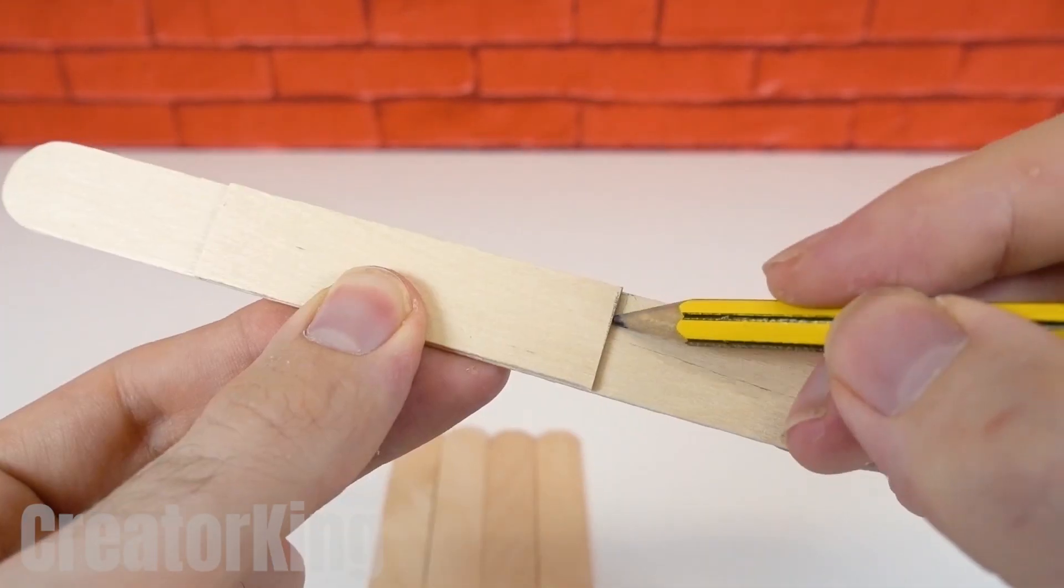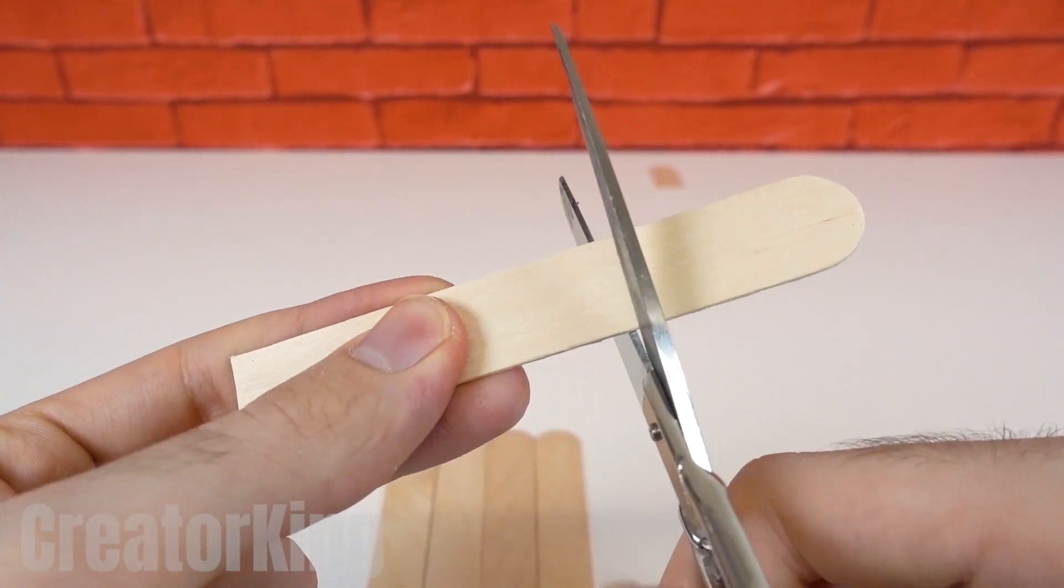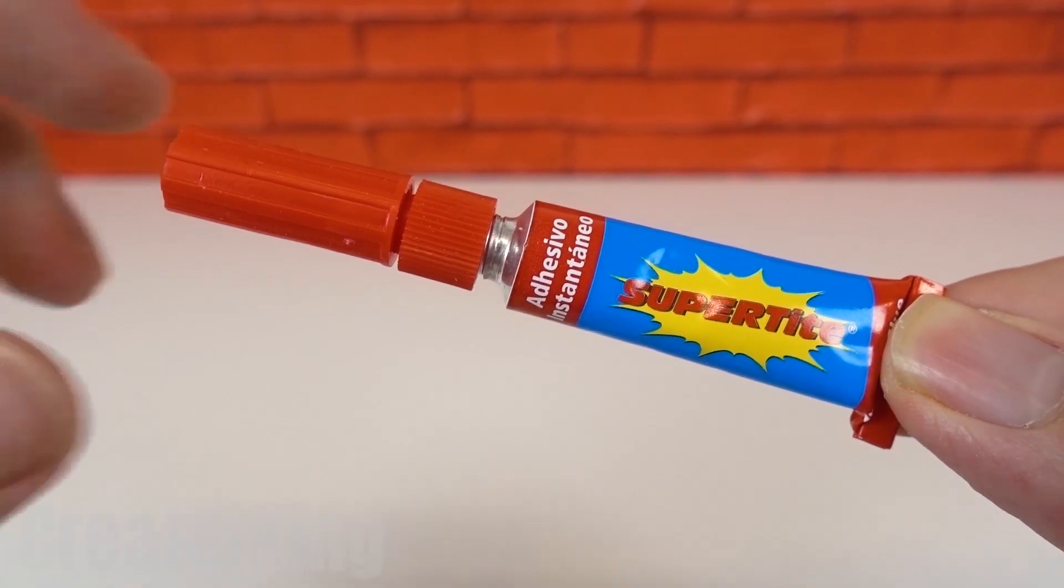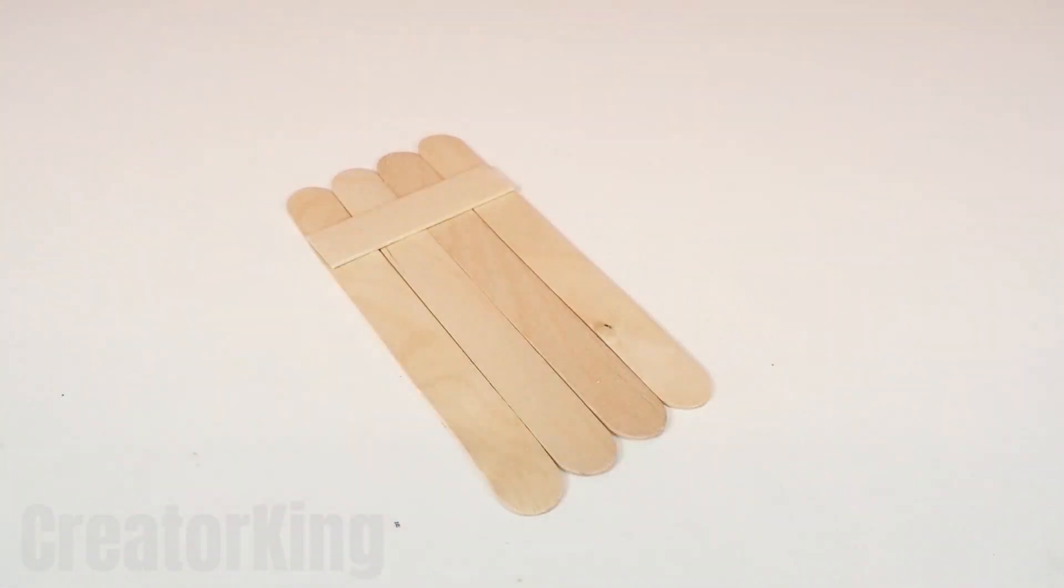Use the piece we just cut to measure another popsicle stick. Then cut it. Here comes the super glue. Place a small dot on each wooden stick and glue one of the pieces you cut on top. Do the same to the bottom.